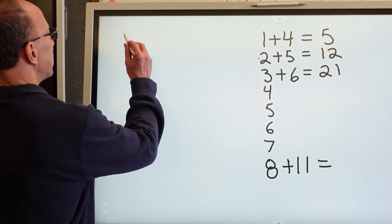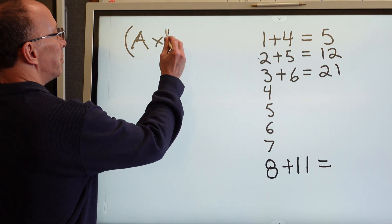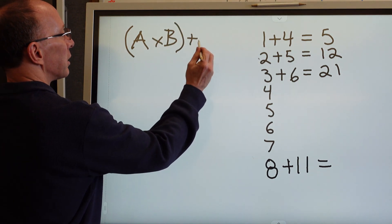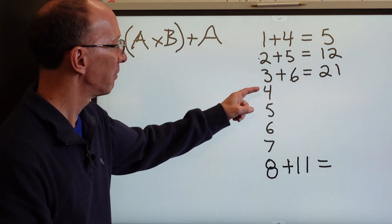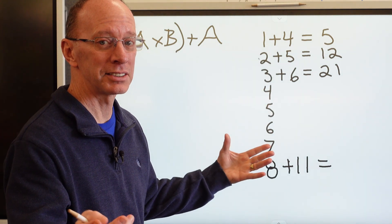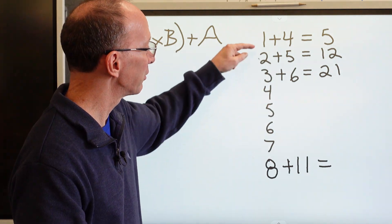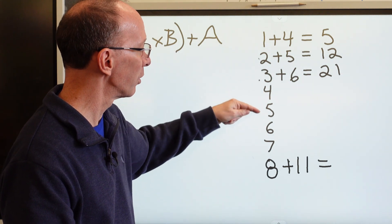So remember, our secret formula was A times B plus A. So here I'm just going to fill in this little pattern. Remember, mathematics is all about patterns. So if the pattern continues 1, 2, 3, it would continue all the way going to 4, 5, 6, 7, all the way to 8.